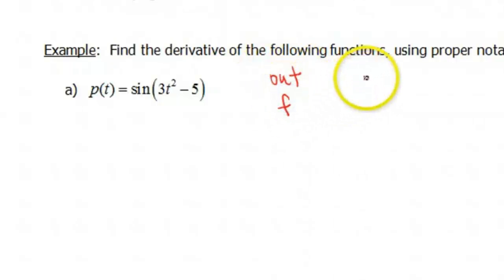What's our outside function and what's our inside function? Our outside we'll define to be f, our inside we'll define to be g. The outside function in this case is sin(t). The inside is the stuff inside the parentheses, that's what's being plugged into our sine function. So that's 3t² - 5.